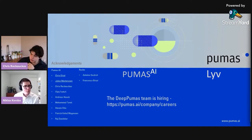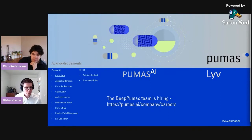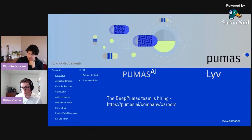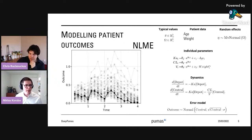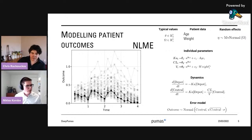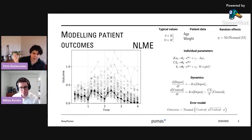A question from YouTube: how do you account for patient heterogeneity — is there a specific hyperparameter in your model that accounts for it? Patient heterogeneity is accounted for with individual parameters. We have a random effects term — distributions that capture anything left on the table or anything we are unable to characterize. So patient heterogeneity comes from individual parameters, coming from the typical values, from patient data, and from the random effects. And that's about time — everyone thank our speaker, Niklas.